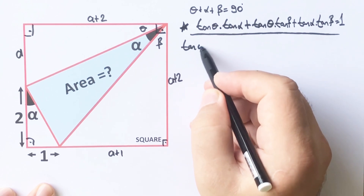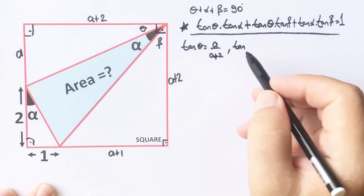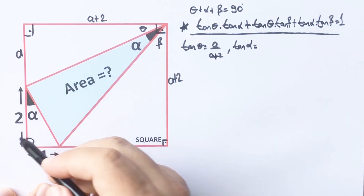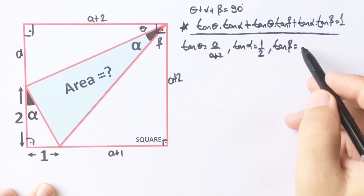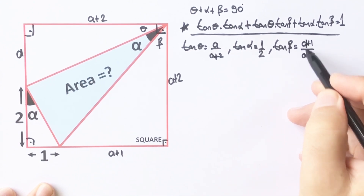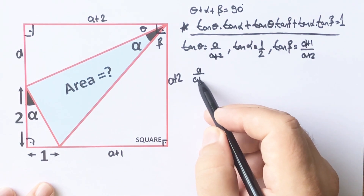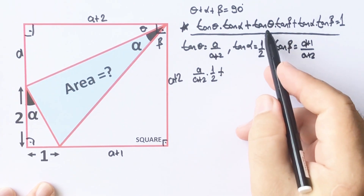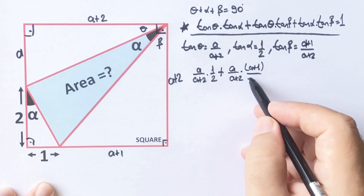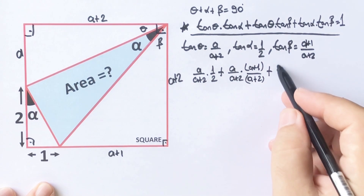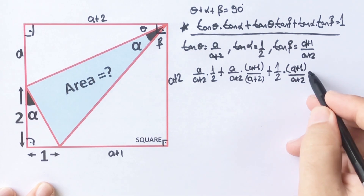Let's calculate the tangent values. Tangent theta equals a over a plus two. If we plug in this value to the formula: tangent theta equals a over a plus two, tangent alpha equals one over two, and tangent beta equals a plus one over a plus two. So the formula becomes: a over a plus two times one over two, plus a over a plus two times a plus one over a plus two, plus one over two times a plus one over a plus two equals one.